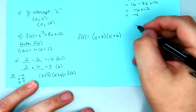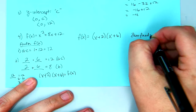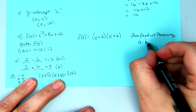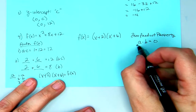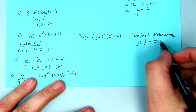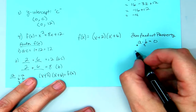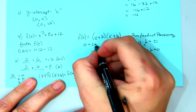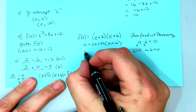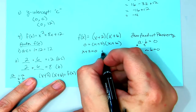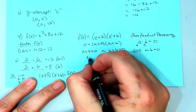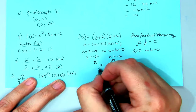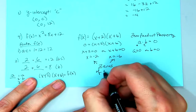From here, we use the zero product property. That says if two numbers are multiplying each other and we get zero, then one of them has to be zero. So we want 0 = (x + 2)(x + 6). That means x + 2 = 0 or x + 6 = 0. So x = -2 or x = -6. These are the zeros of the function.